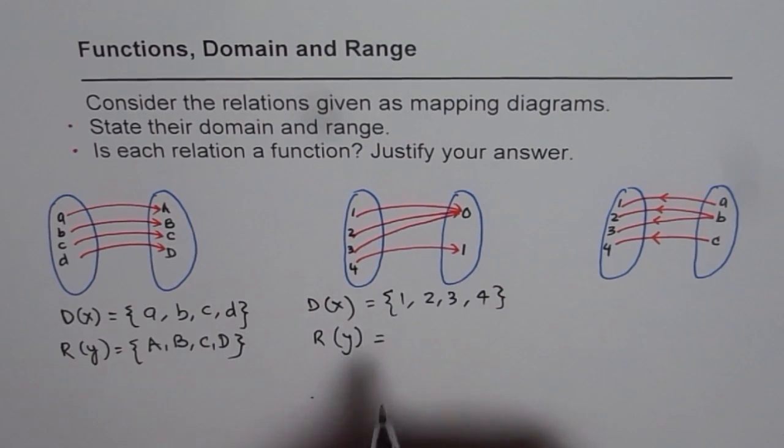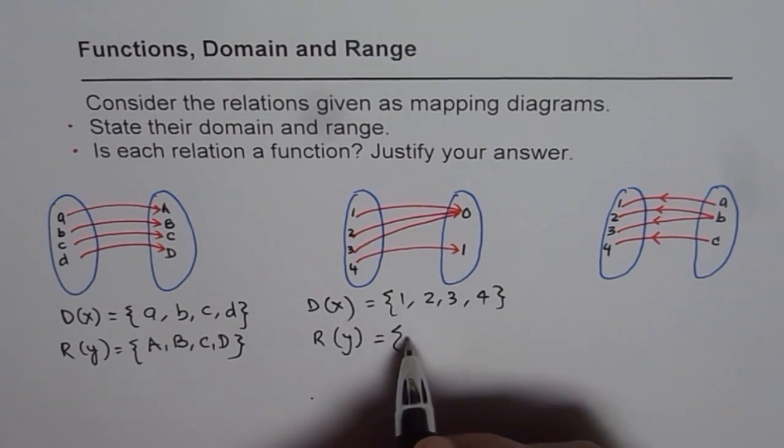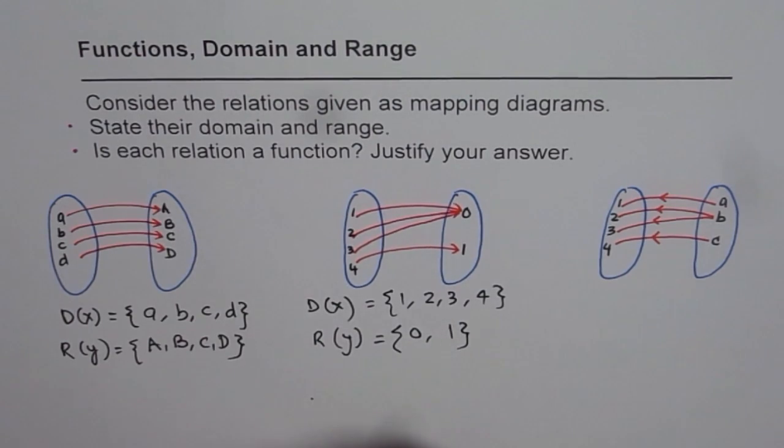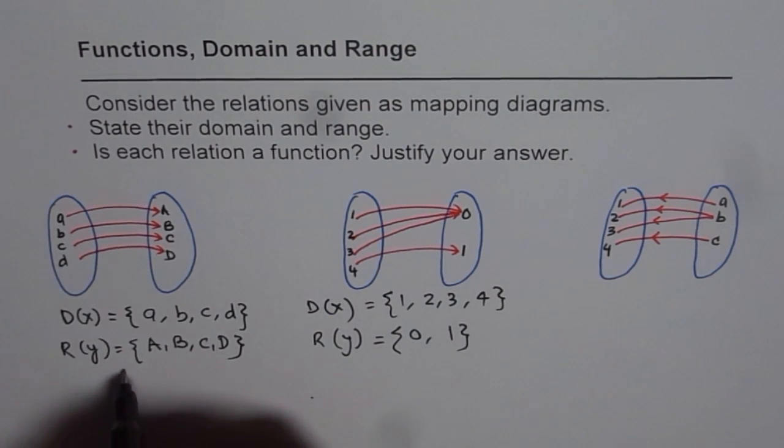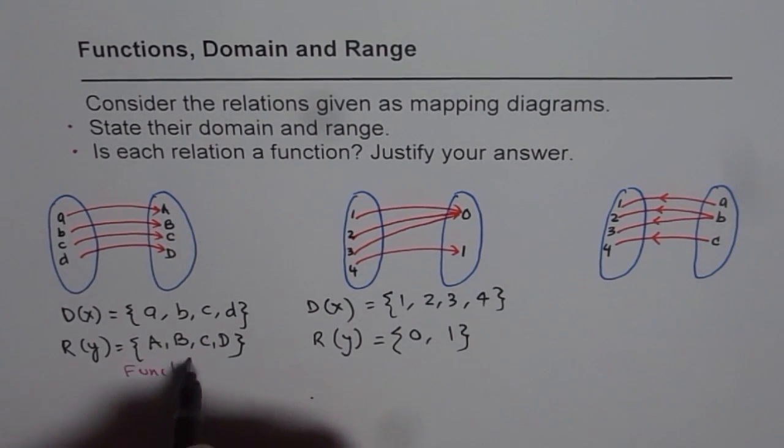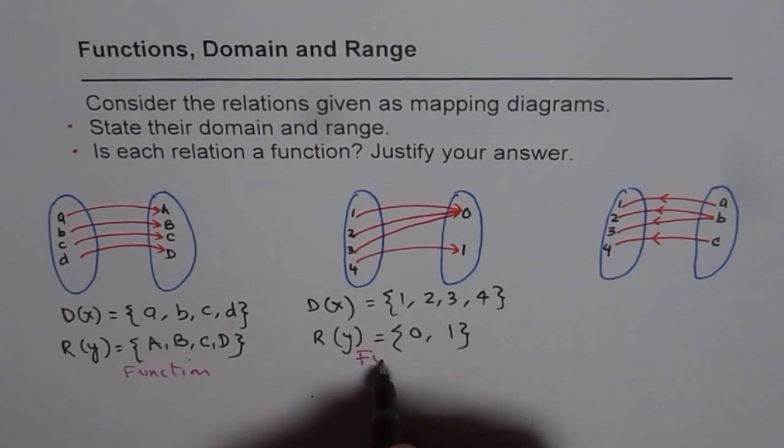The dependent values which are zero and one. And this is a function as the earlier one was also. So this is a function we saw, and this is also a function.